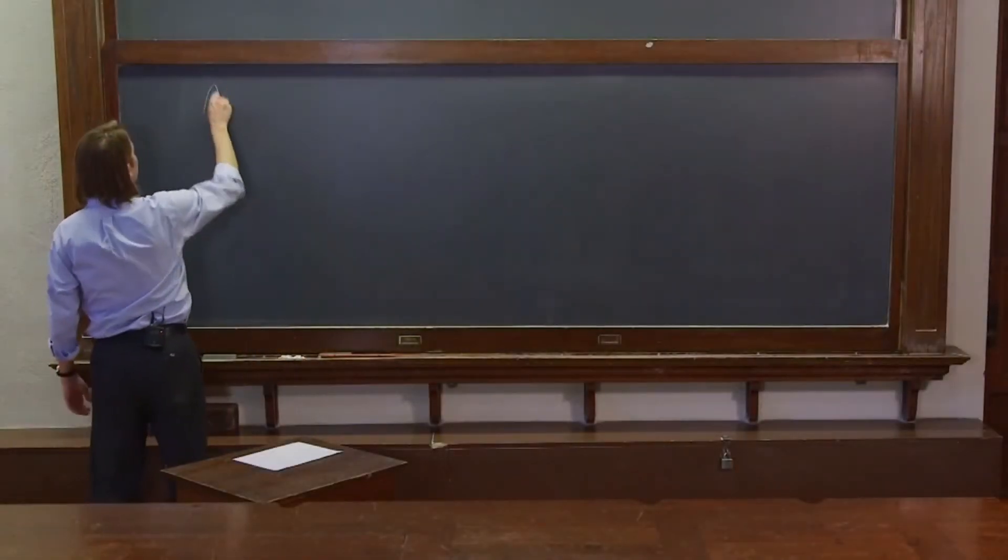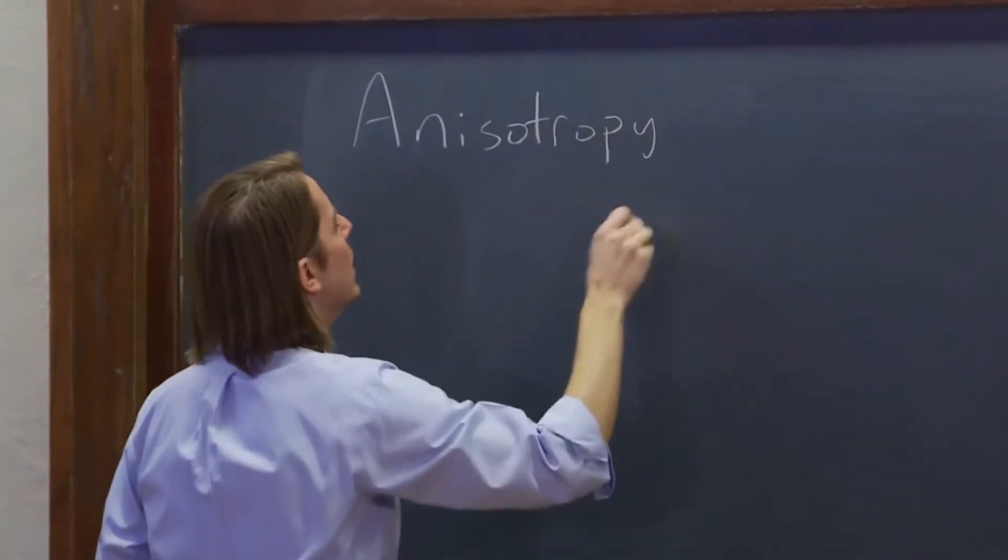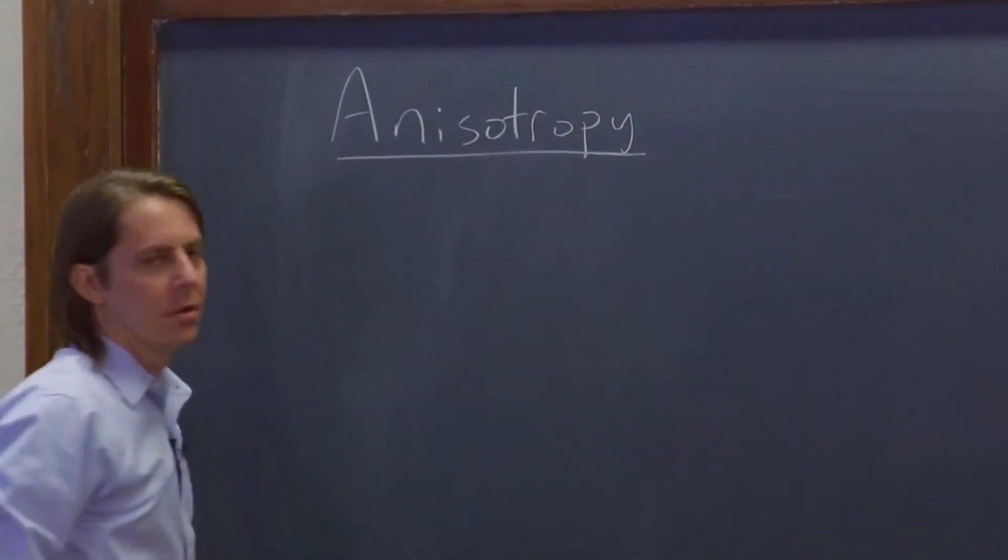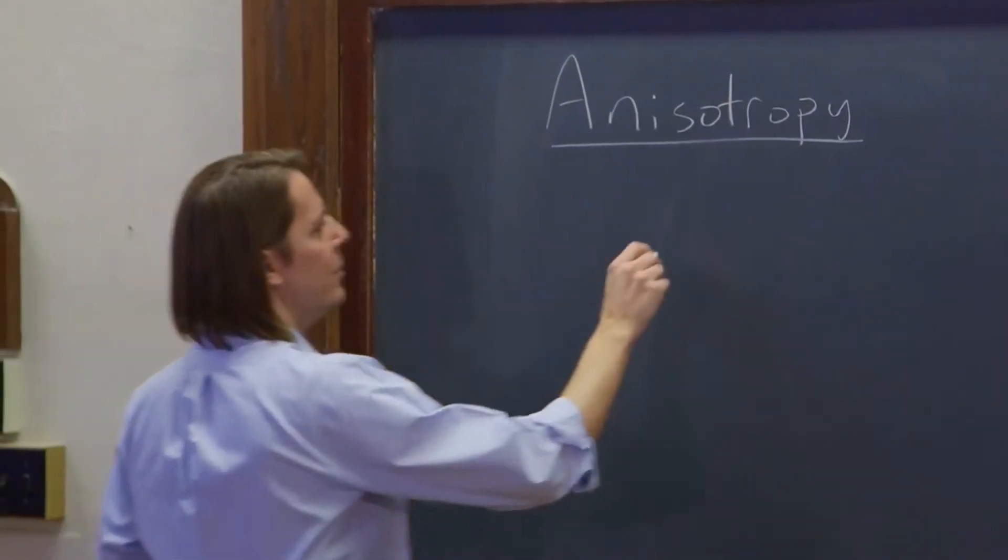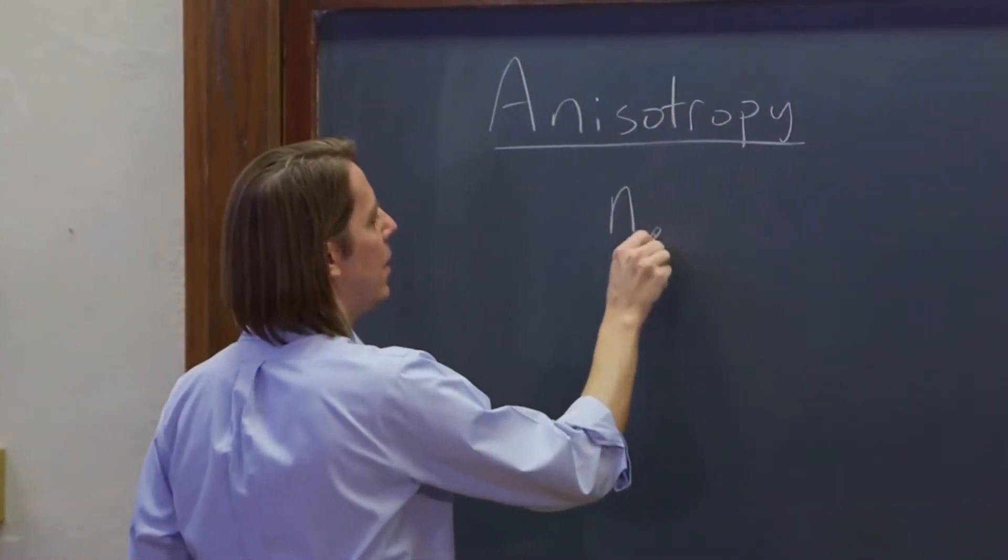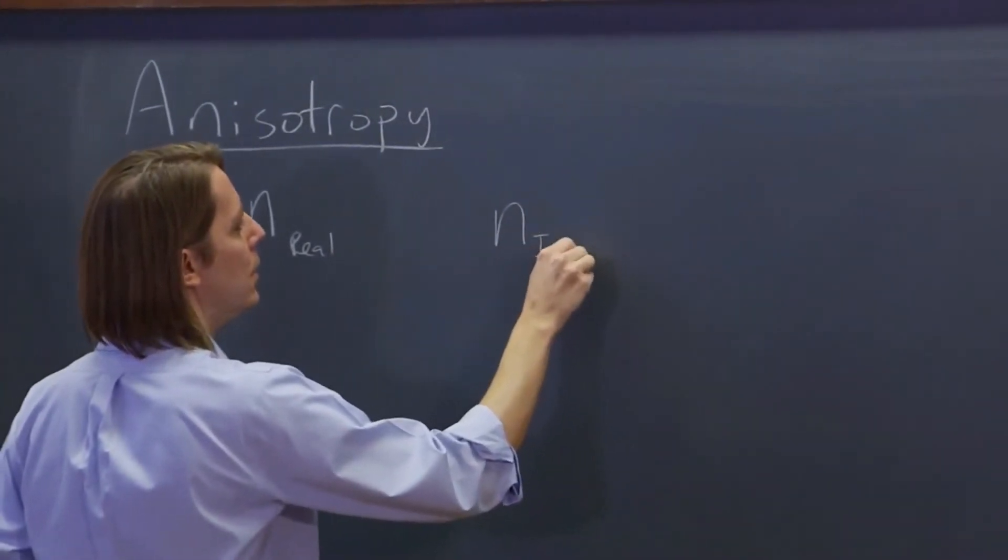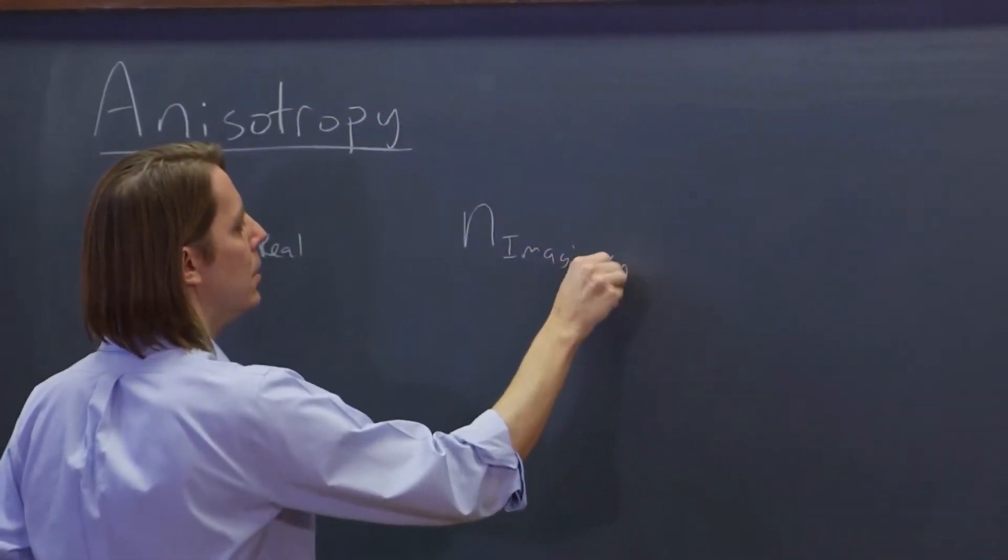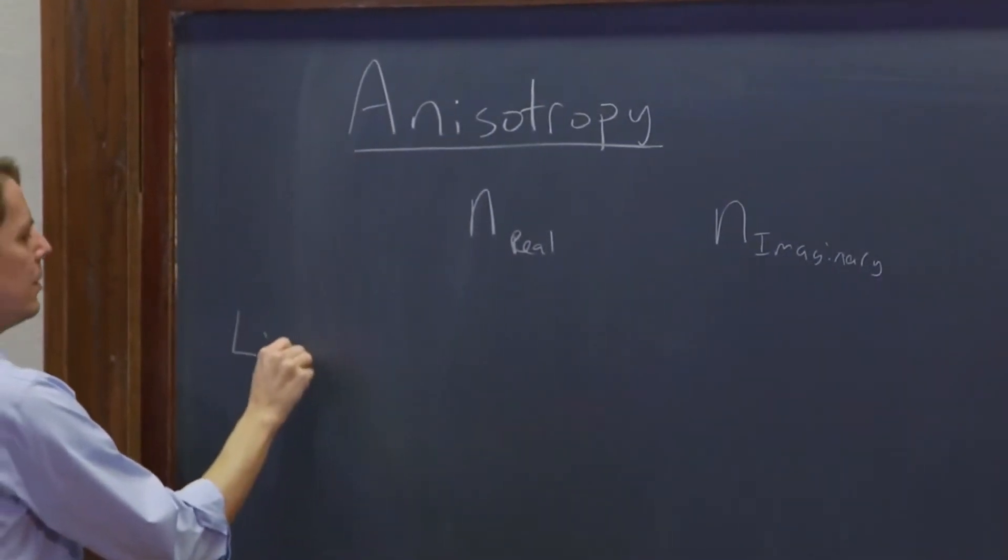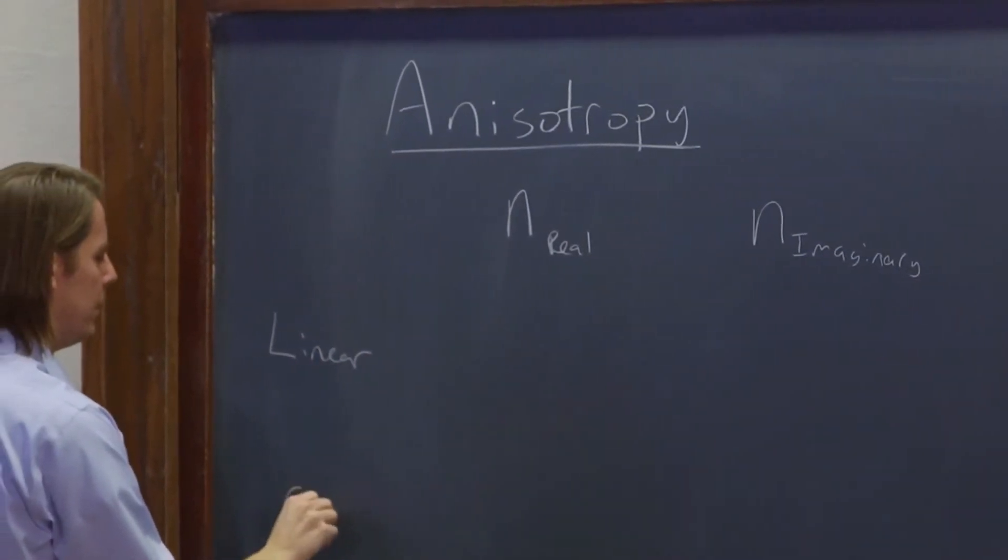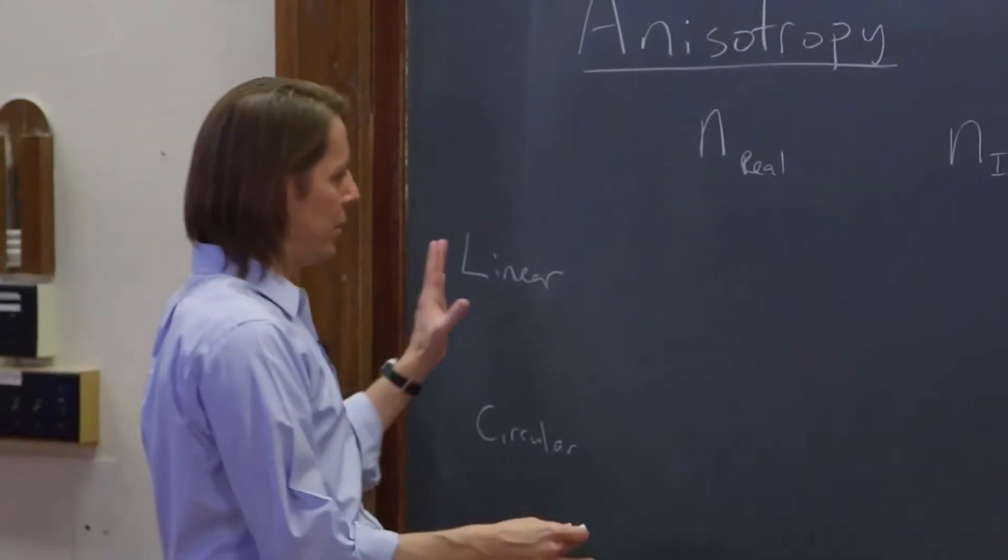So we have looked at how anisotropy in materials can be used to make optical elements that manipulate polarization. We've looked at real and imaginary, and we have looked at linear light and circular light. Now let's see if we can review what goes where.